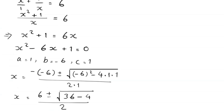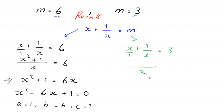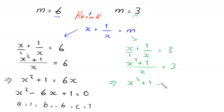When m equals 3, the equation becomes x plus 1 over x equals 3. Taking LCM as x gives x squared plus 1 over x equals 3. Multiplying both sides by x: x squared plus 1 equals 3x. Moving 3x to the left-hand side: x squared minus 3x plus 1 equals 0.